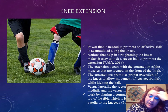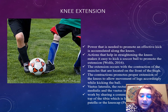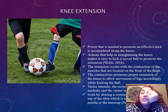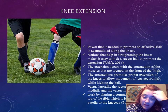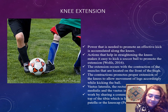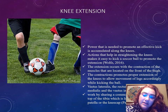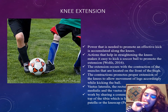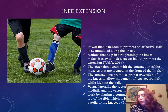So the knee extension — the power that is needed to promote an effective kick is accumulated along the knees. This action helps in straightening the knees, which makes it easier to kick a soccer ball by promoting the extension. The extension occurs with the contraction of the muscles located on the front of the thigh. The contractions promote proper extension of the knee to allow movement of legs accordingly. The vastus lateralis, the rectus femoris, the vastus medialis, and the vastus intermedius all work by sharing a common insertion point at the top of the tibia, which is located just below the patella, or the kneecap.